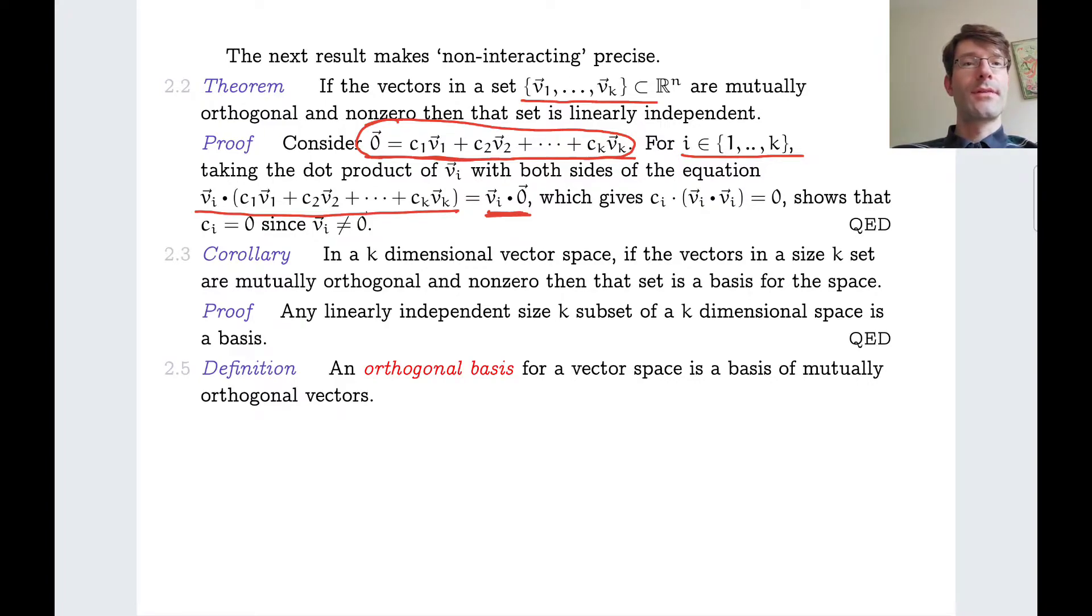Now the dot product distributes over vector addition. That's easy to see. And then most terms become zero, because vi is orthogonal to all the other vj. So most of this will disappear, except one term, which then has to be equal to the number zero. But vi dotted with itself is the length of vi. And that cannot be zero, because we assume that the vi are non-zero, which forces ci to be zero. So we have shown that ci is equal to zero, but we can do the same thing for all i. So all ci are zero.